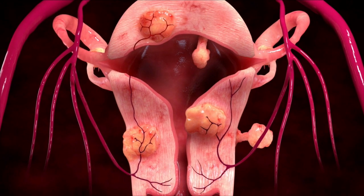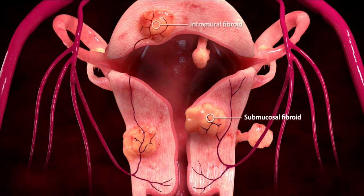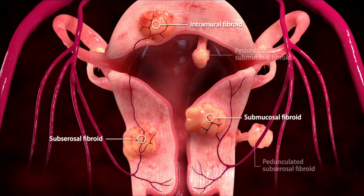These growths can be described in different ways as we've discussed in our About Fibroid seminar. They can form under the inner lining of the uterus, called a submucosal fibroid, or they can be within the wall of the uterus, called an intramural fibroid. If they're under the outer lining of the uterus, they're called subserosal fibroids. They can be further categorized as pedunculated if they hang off the inner or outer walls of the uterus.